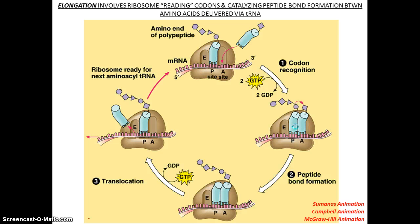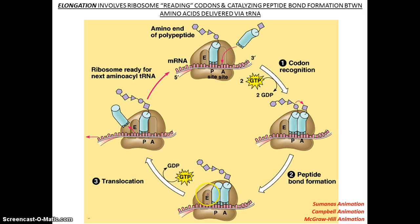Elongation involves reading the codons and catalyzing peptide bonds between the amino acid and the new tRNA that arrives. The tRNA is recognized by the mRNA codon — the codon is complementary to the anticodon on the tRNA. The bond on the growing polypeptide is broken, and a new peptide bond is formed with the newly arrived amino acid. The old tRNA moves to the E site and leaves, and the tRNA that was at the A site moves to the P site, and the process continues.